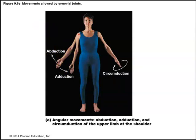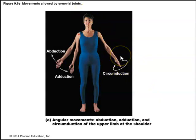Circumduction is moving a limb or finger so it describes a cone in space. Circumduction of the upper limb at the shoulder means moving your arm in a cone-like circle. It combines flexion, abduction, extension, and adduction in succession.